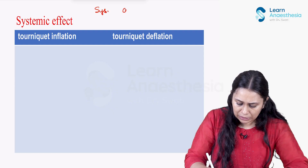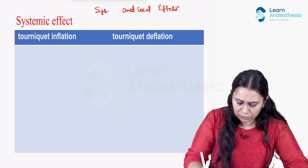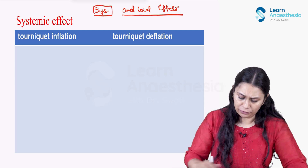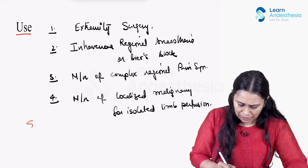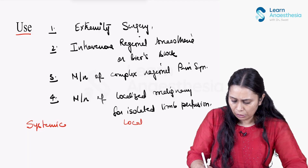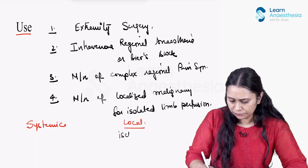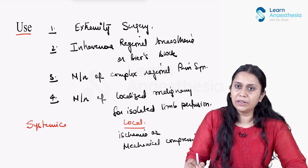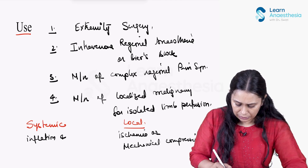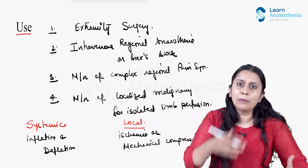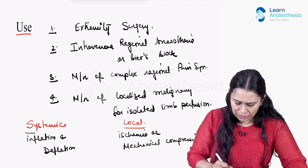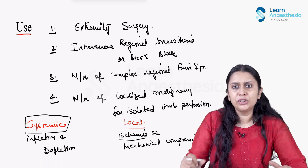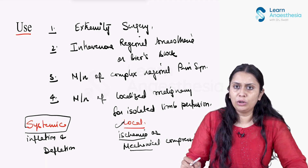The tourniquet has both systemic effects and local effects. Local effects are mostly due to ischemia and the mechanical compression caused by the tourniquet. Systemic effects are due to the inflation and deflation of the tourniquet. Local side effects arise from ischemia or mechanical compression, while systemic side effects affect the cardiovascular, respiratory, and other systems.